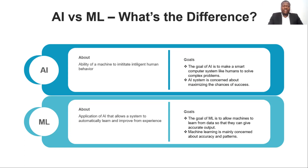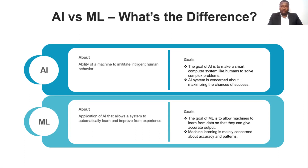Let's look at machine learning. Machine learning is also in line with AI, but the key difference is that it's an application of artificial intelligence that allows a system to automatically learn and improve from experience. You can use it through data — you're essentially teaching a bot how to behave and gain results from that. The goal of machine learning is to allow machines to learn from data so that they can give accurate output. Machine learning is mainly concerned with accuracy and patterns from the data you feed it.